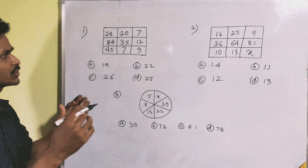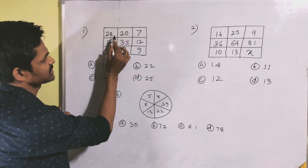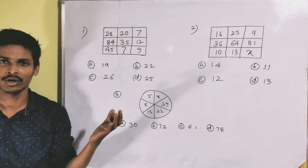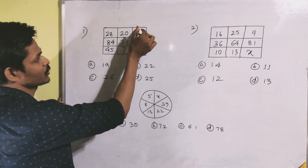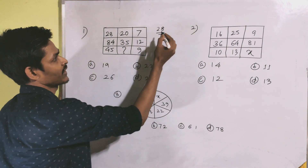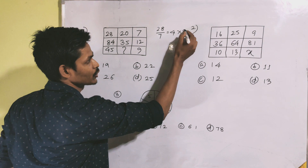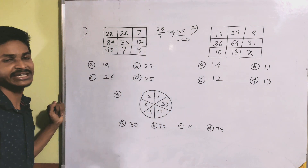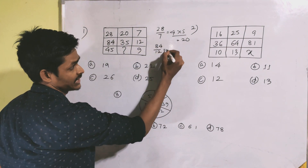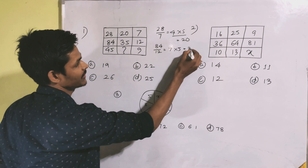The first thing is: 28 divided by 7 gives 4. And this 4 times 5 gives the middle term — 28 and 20 both relate to 5. Similarly, 84 divided by 12 gives 7, and 8 is the factor. So 84, 12, 7, 8 follow the same pattern with the middle term being 5.